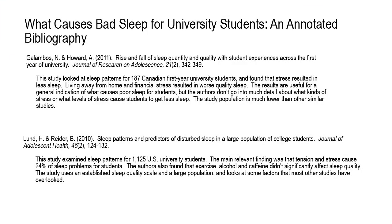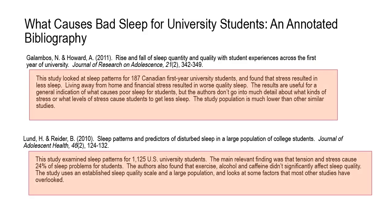An annotated bibliography is a list of sources on a topic, just like a bibliography you would put at the end of a paper. The difference is that each source has an annotation, or a short paragraph that describes the content, evaluates it, and points out how it fits in or differs from other research on the topic.